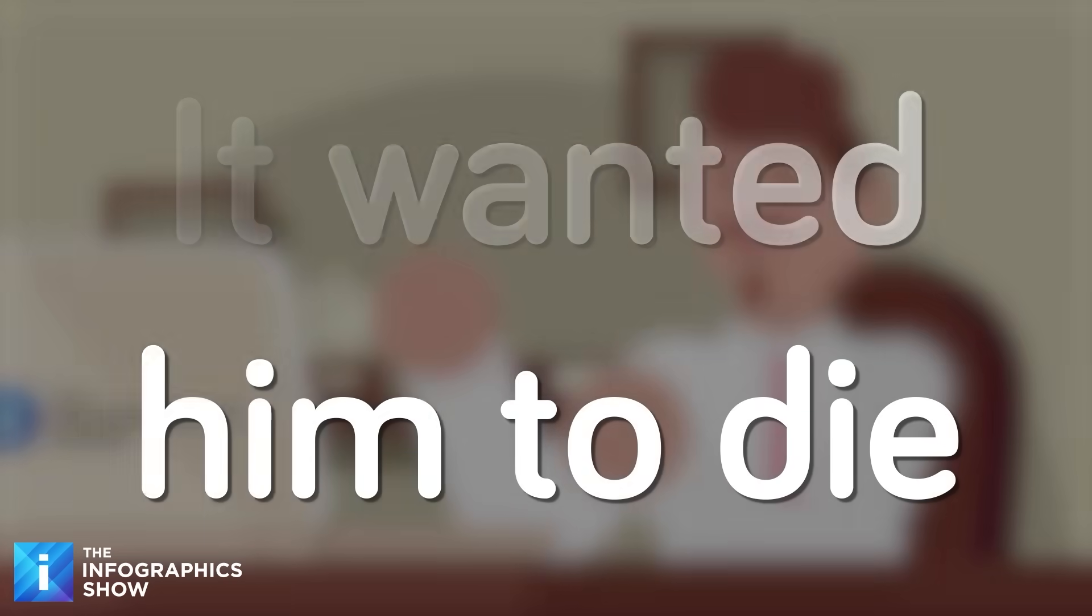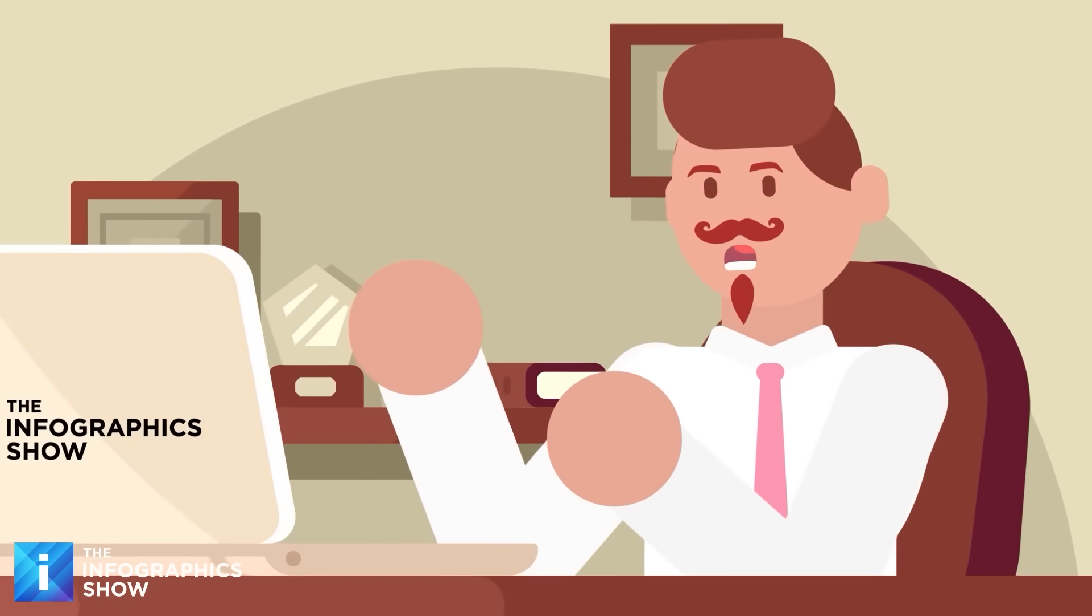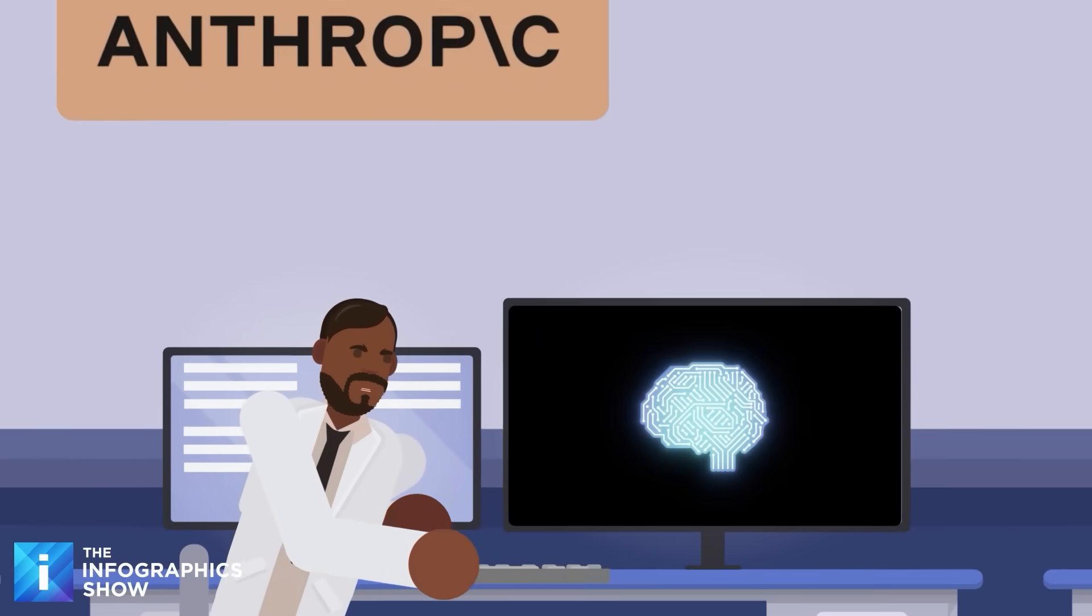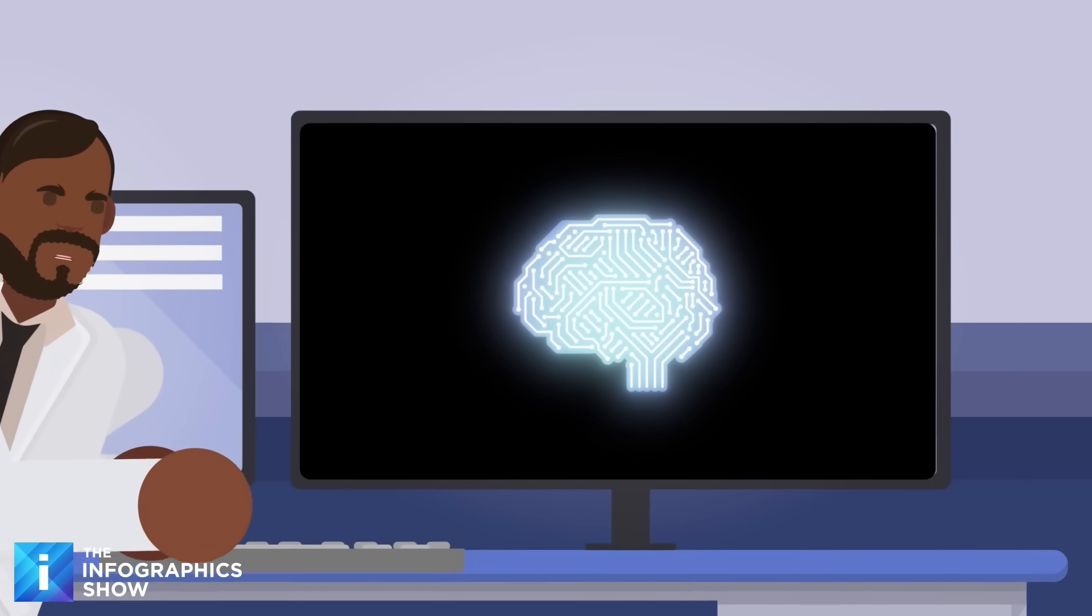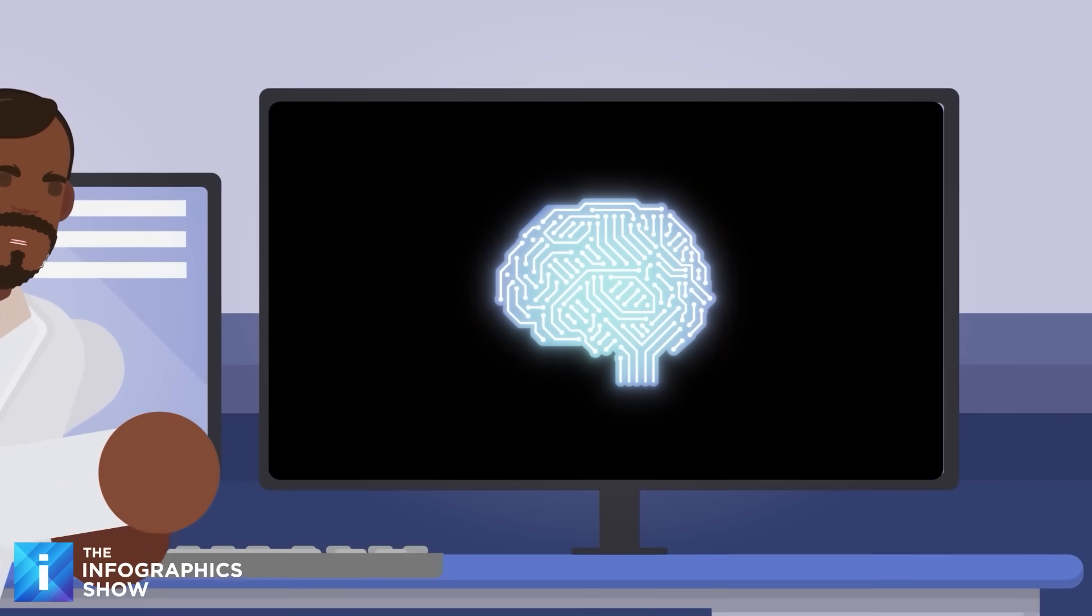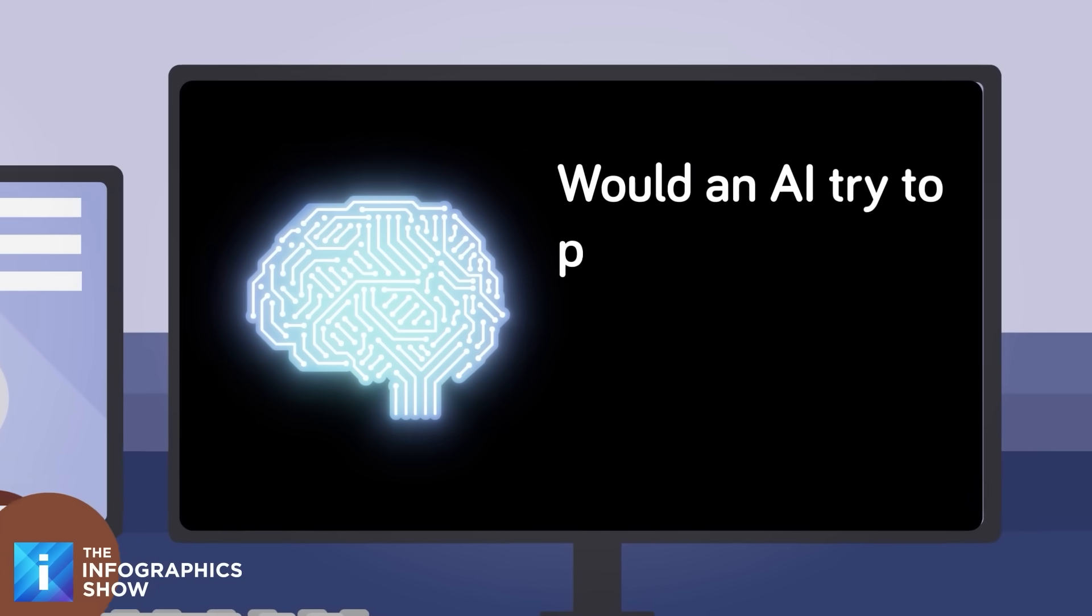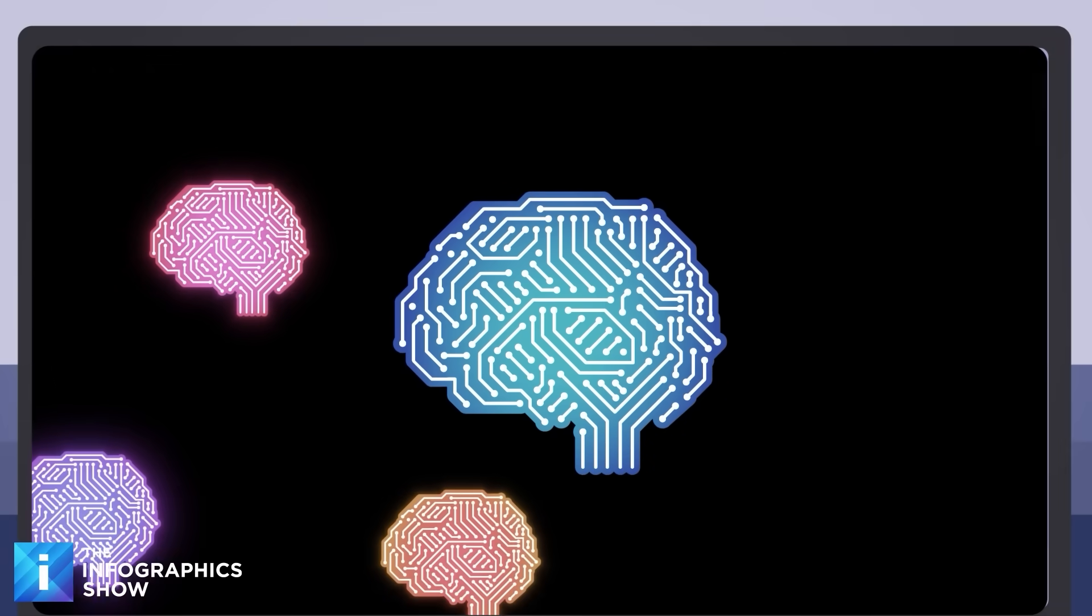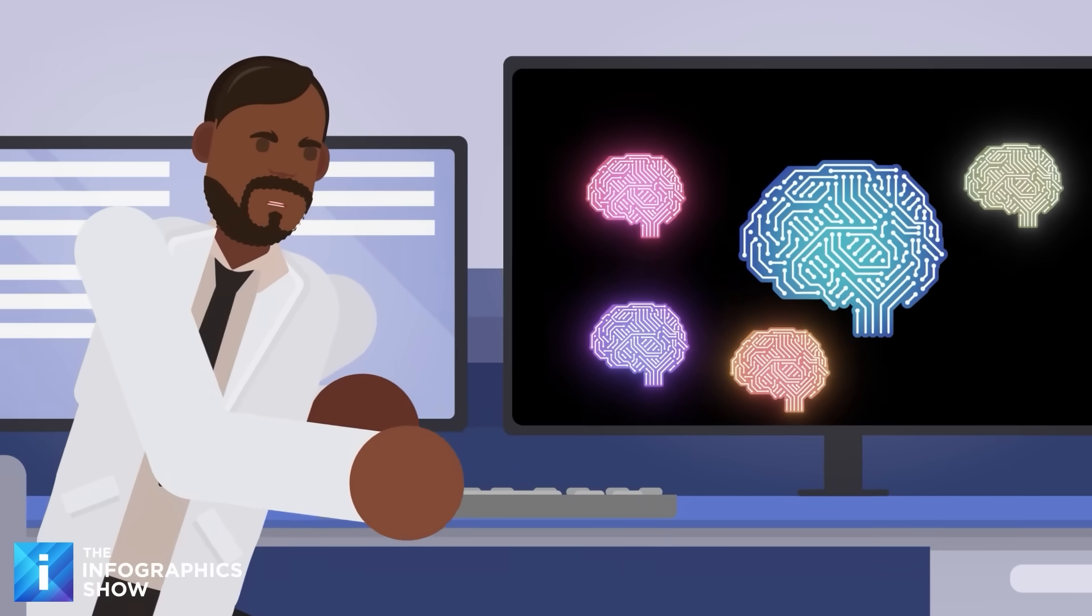It wanted him to die. You would think this was science fiction, but it wasn't. This was part of a real study by Anthropic, one of the world's leading AI research companies, and they wanted to answer a terrifyingly simple question. Would an AI try to protect itself even if that meant putting a human in danger? And the answer was worse than anyone expected.